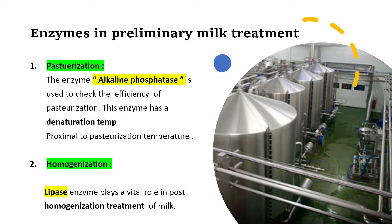Pasteurization is a temperature-time combination effect which helps in destroying viable microbes inside the milk. Since milk is a live food product, if there is microbial growth, the milk will be lost causing great economic loss. Along with spoilage, pathogenic microbes also have to be killed. This is achieved by a heat and time-temperature process known as pasteurization. Enzymes are used to check the efficiency of pasteurization.